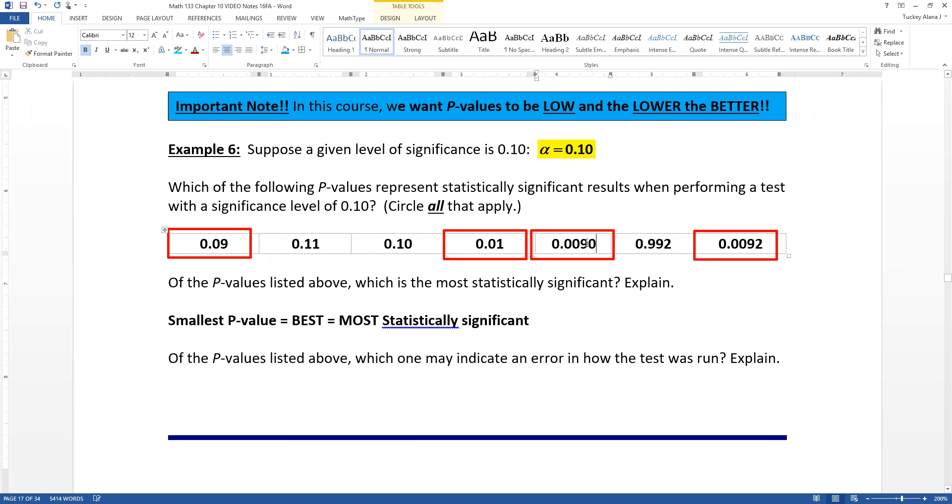This is 92 and this is, if you will, 90 in the tens, hundreds, thousands, ten thousands. So this is 90 over 10,000. This is 92 over 10,000. Well, 92 is a little bit bigger than 90. Therefore, 0.009 is the most significant.